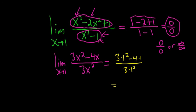3 times 1 squared is 3, minus 4, over 3. 3 minus 4 is negative 1, and the bottom is 3. So the final answer is negative 1 over 3.